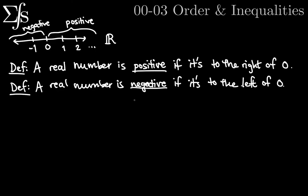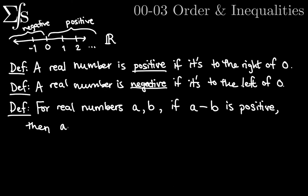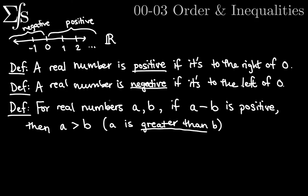We're going to use the notion of positive and negative to define bigger and smaller, or greater than or less than. For two real numbers A and B, if A minus B is positive, then we say A is greater than B. What does that mean? Think about an example: five minus three is two, two is positive, two is to the right of zero, so that tells us that five is greater than three.